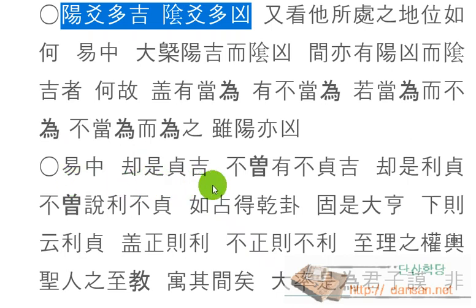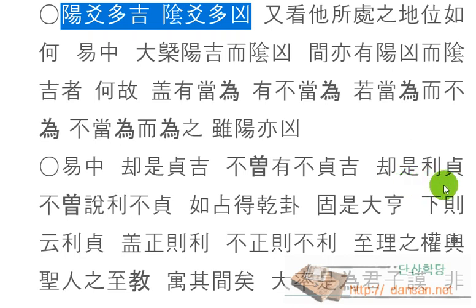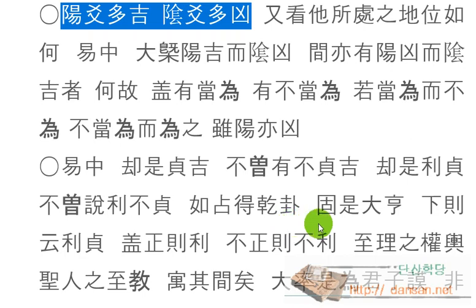역중인 각시정길이요 불정요 불정길하여, 도시리정이요 불중설리 부정하니, 여천득헌 괴의 고시태형이 난, 하즉온이정하니.